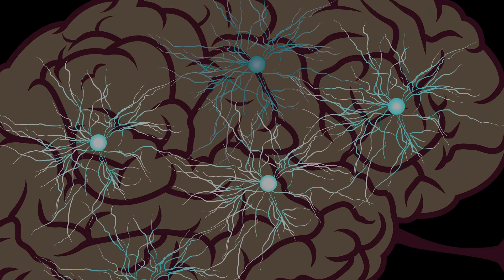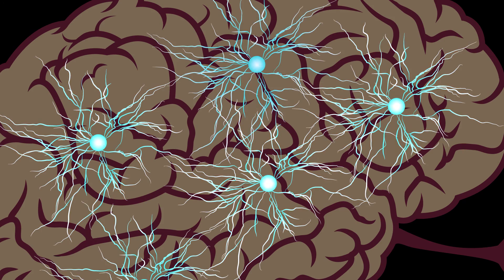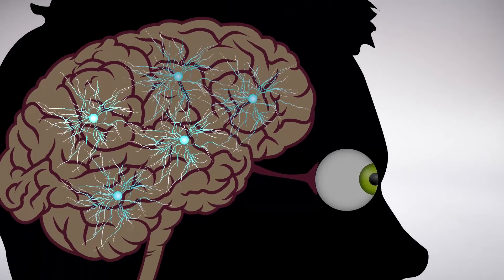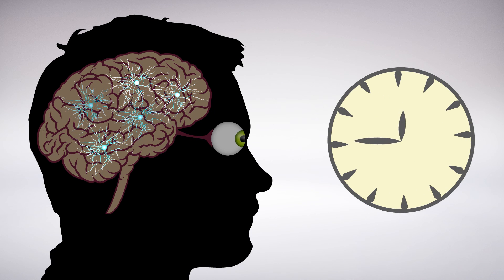These results suggest dendrites aren't just passive cables ferrying information in the brain as previously thought. Instead, the branches take an active role in processing information, shaping it, ultimately influencing how we see.